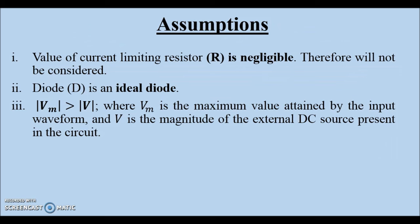Our analysis of the biased series clipper circuit is based on three assumptions. First, the value of the current limiting resistor R is negligible and is therefore not considered in the circuit. Second, the diode under consideration is an ideal diode with cut-in voltage of 0V and forward resistance of 0 ohm. Third, the magnitude of the peak of the input signal Vm is more than that of the bias voltage V used in the circuit.